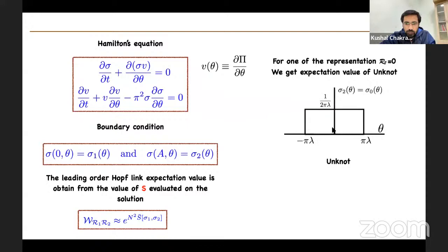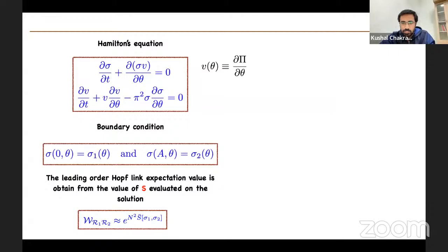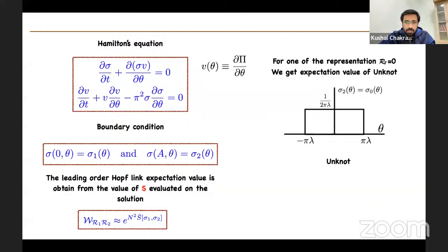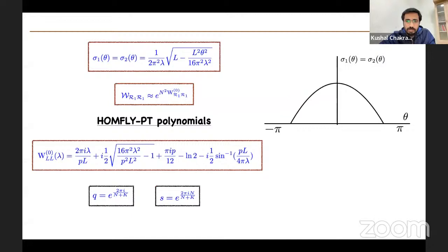In the large-N limit, the leading contribution to the Hopf link expectation value is given by the action S-bar evaluated on the solutions of these fluid equations. One can similarly calculate the Wilson loop expectation value for an unknot by setting one representation of the Hopf link to be trivial — for instance, setting R2 to be trivial gives the unknot with representation R1. For the trivial representation, the density profile is flat, and to find the unknot expectation value one solves the fluid equations with sigma_1 being the density of representation R1 and sigma_2 being the trivial density profile.